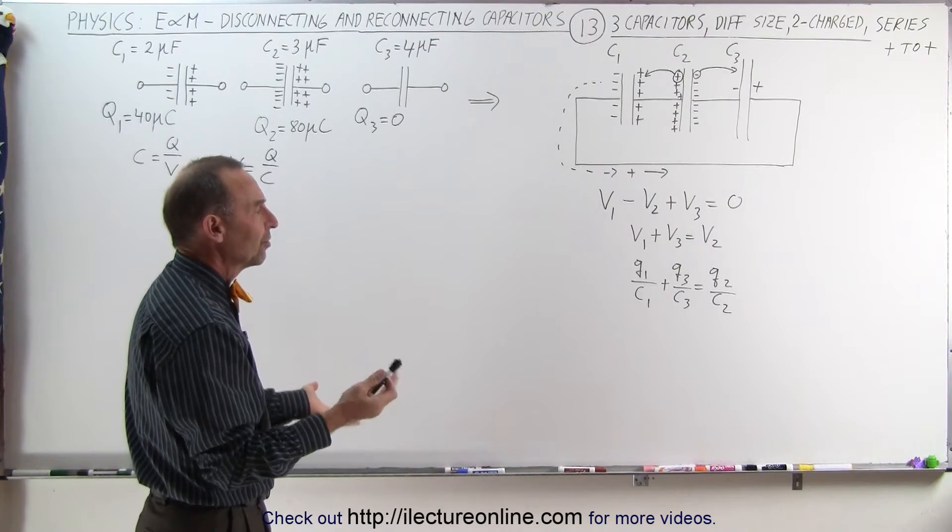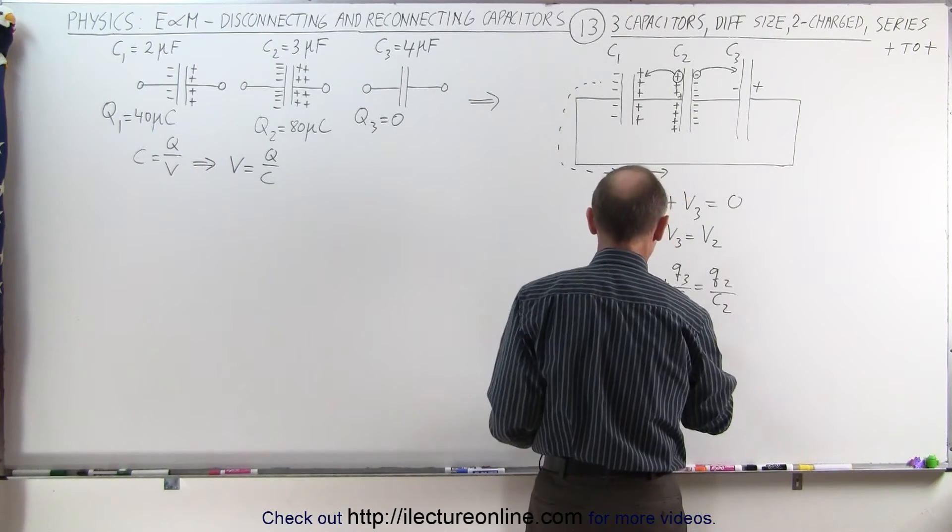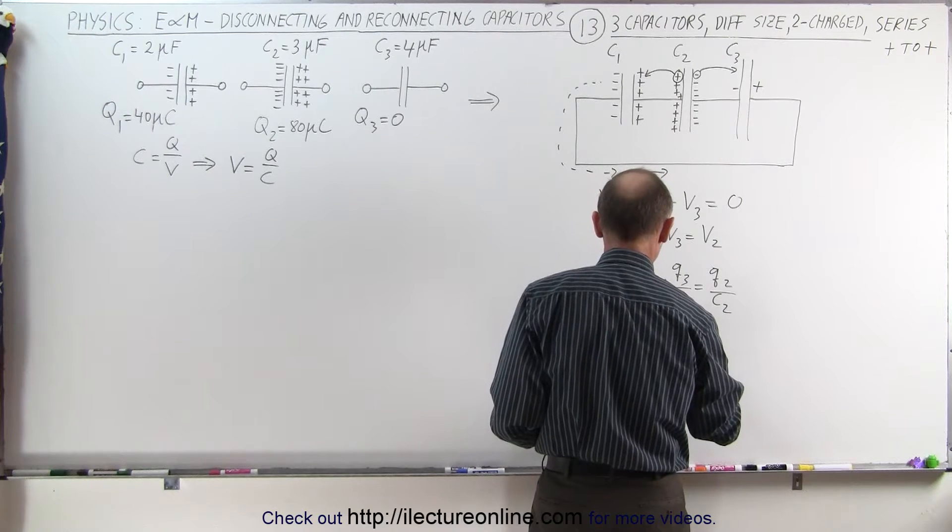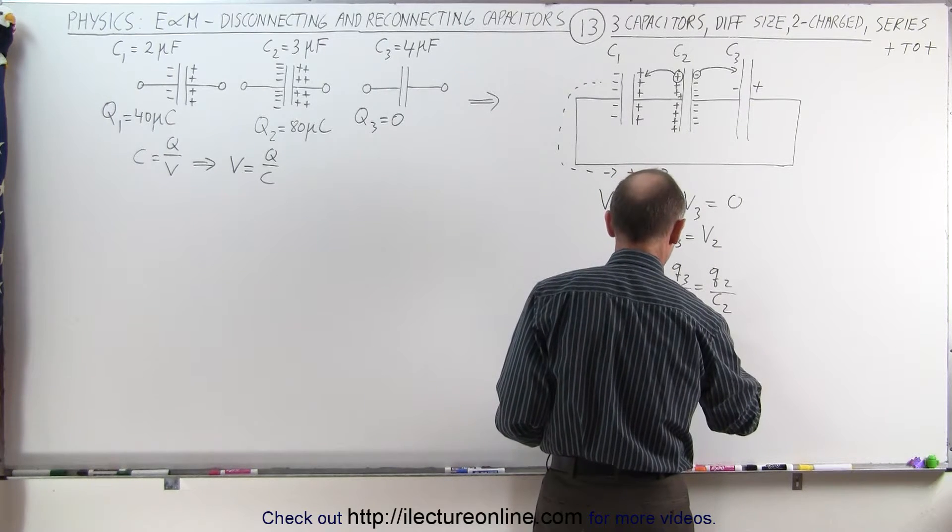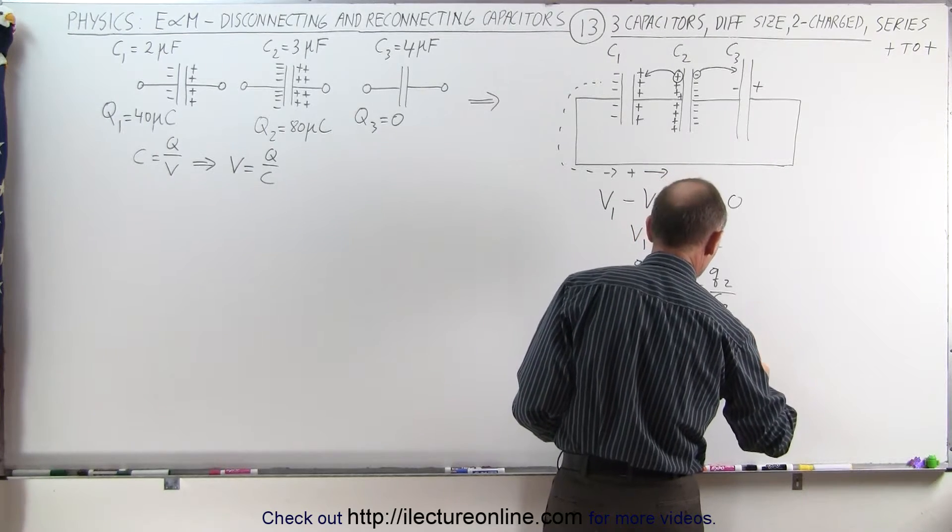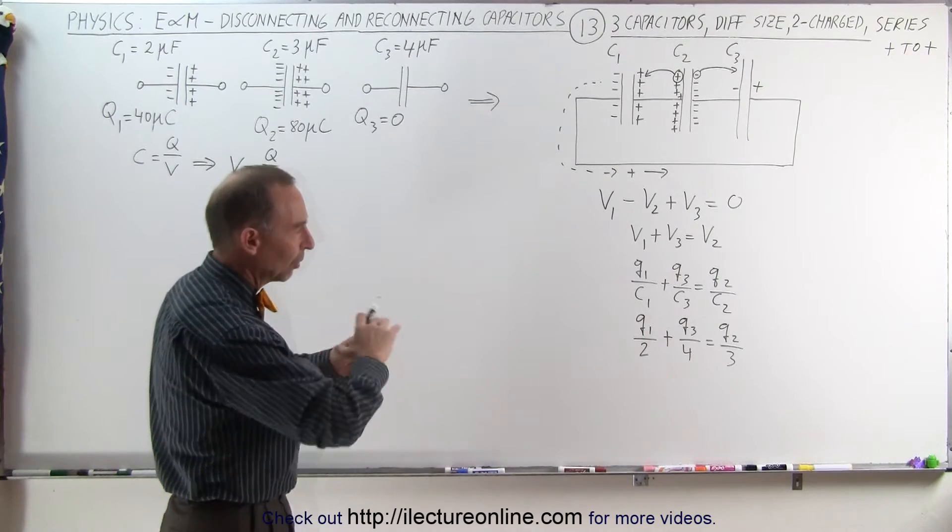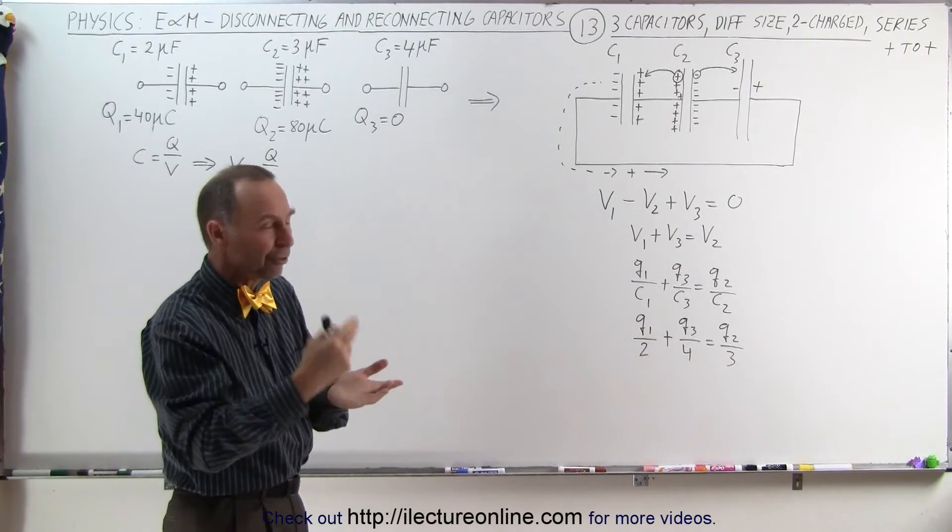Since we know what C1, C2, and C3 are, we can go ahead and write those numbers down. So we can write that this is Q1 over 2 plus Q3 over 4 is equal to Q2 over 3. We don't have to write microfarads, because to simplify, we just leave those off.